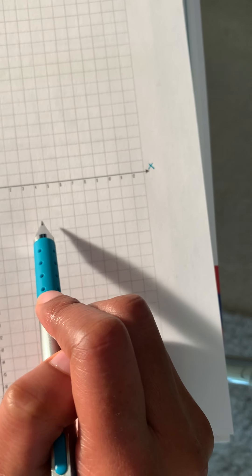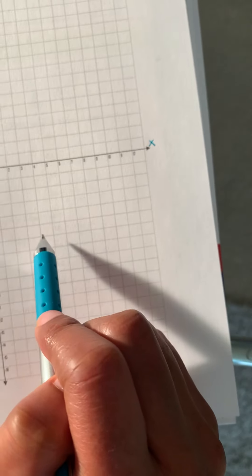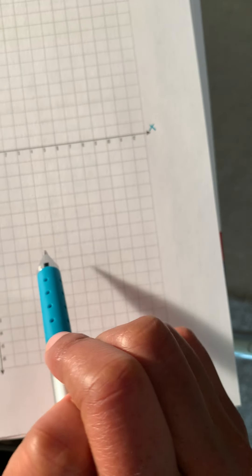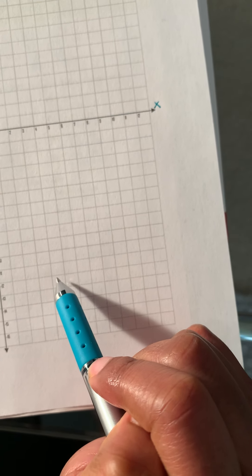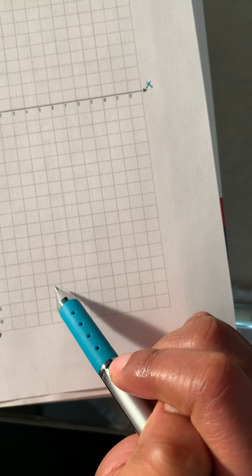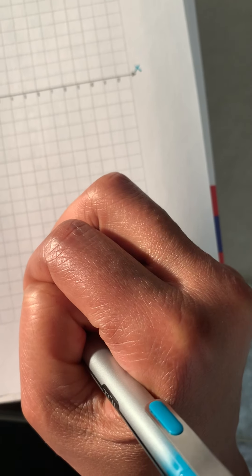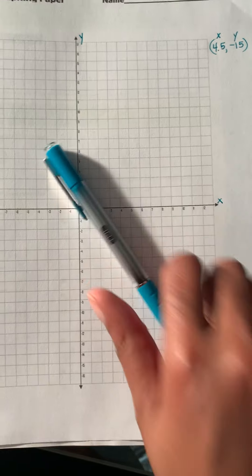And then I want to move down 15 in the negative direction. 1, 2, 3, 4, 5, 6, 7, 8, 9, 10, 11, 12, 13, 14, 15 goes right here. So far so good? Let's get to the next one.